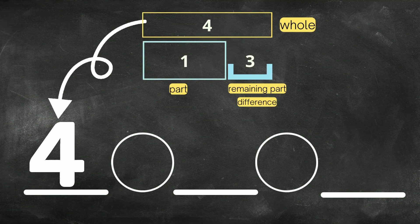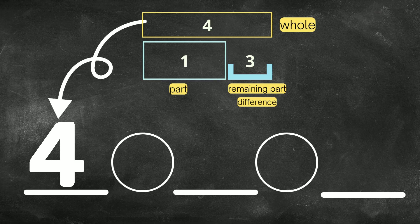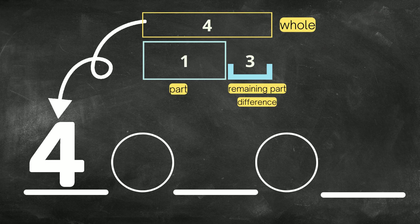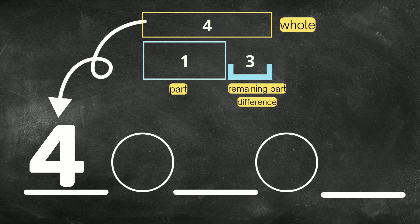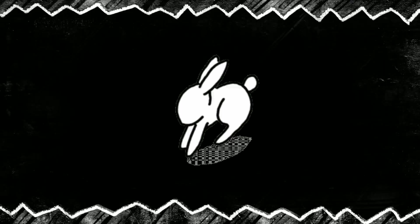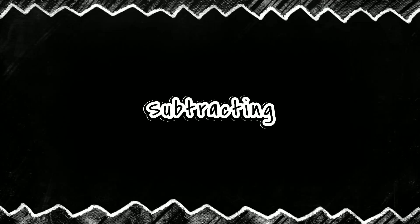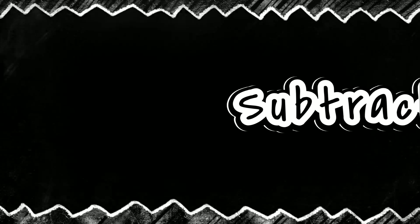Remember, the whole part goes in first. Then the clue word says one bunny hopped away. Remember, the clue word is the word away. I know when we take away, or they run away, or they go away, it means I am subtracting.